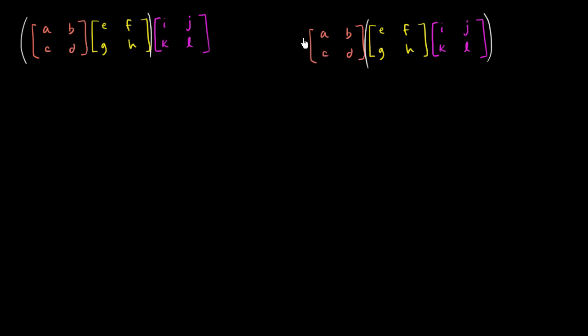And then another scenario where first I multiply the yellow and the purple and multiply that times the orange. And if these two products based on which ones I do first come out the same, then I've just shown that at least for three two by two matrices that matrix multiplication is associative. We've already seen that it's not commutative, but let's see whether it's associative.